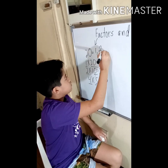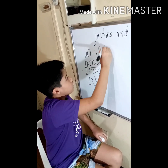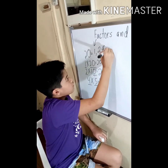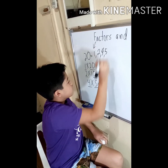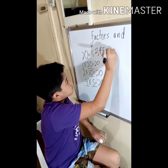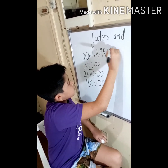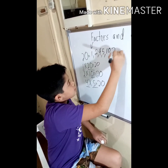So the factors of 20 are 1, 2, 4, 5, 10, and 20.